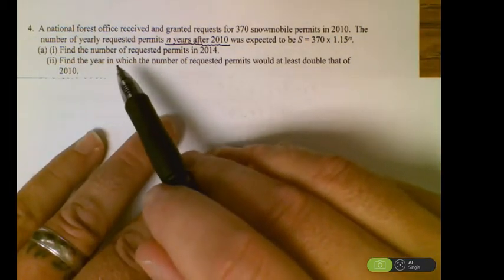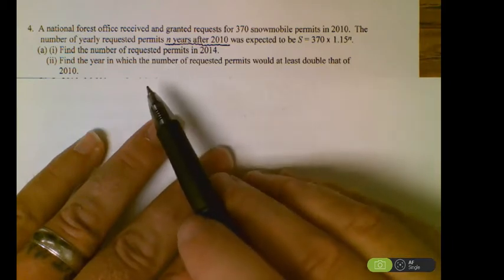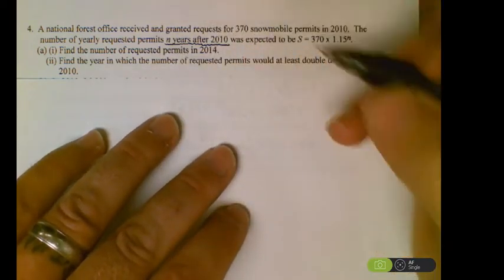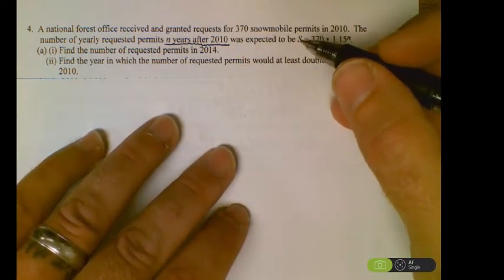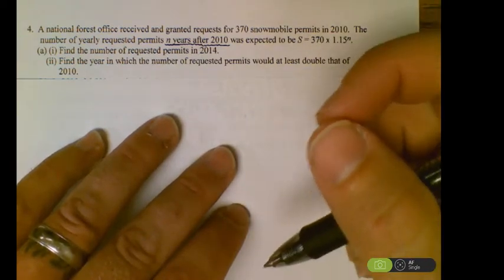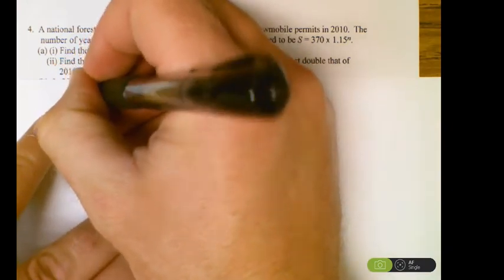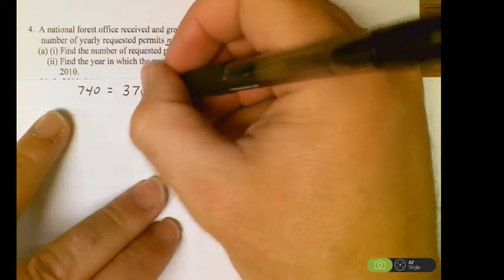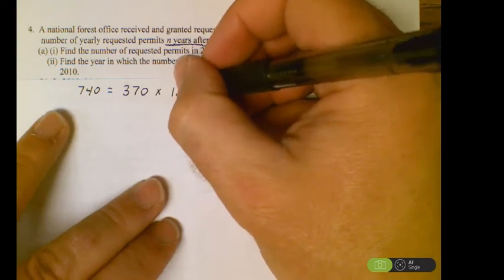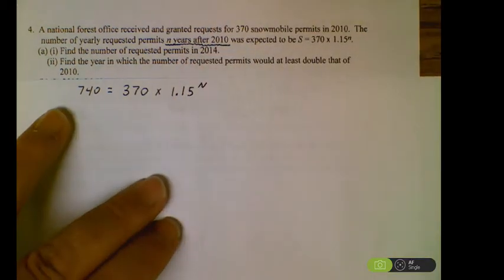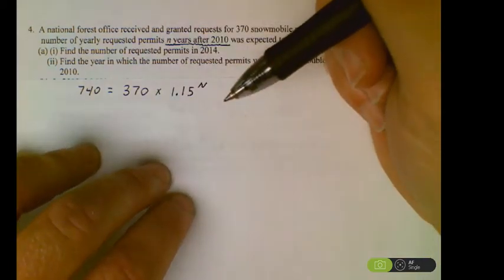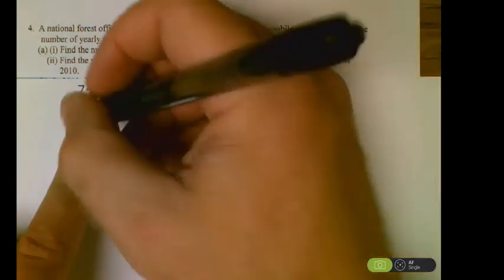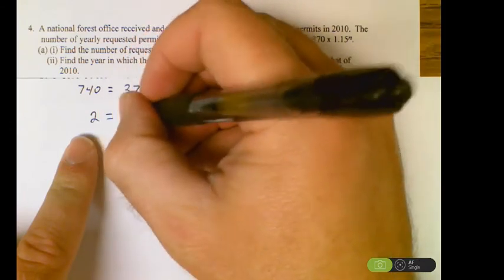In this case, now they're saying find the year. So we're going to be trying to figure out the exponent. Where the number of requests would at least double that of 2010. We know the future value is going to be double this amount right here. So 740 is going to be the future amount. We got the 370 as the initial amount. We're going to be solving for our exponent on this. So we're thinking logs since we're solving for an exponent. Just divide that over. We already know it goes in twice because of the wording in the question. So we got our 2 equals 1.15 to the n.